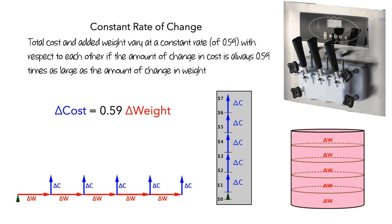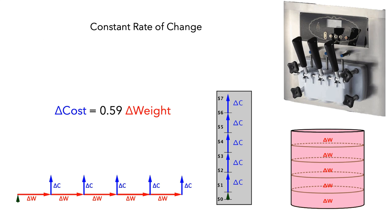So a consequence of our definition of constant rate of change is, for every fixed amount of change in weight, the amount of change in cost is constant.